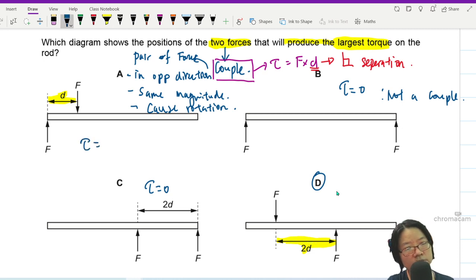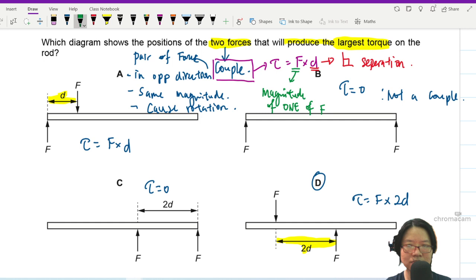So this torque here would be F times d. This torque here would be F times 2d. And anyway, this F here is magnitude of one of the forces. Magnitude of one of the couple. Don't take two, just take one.